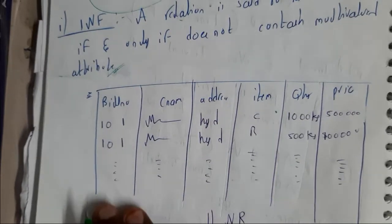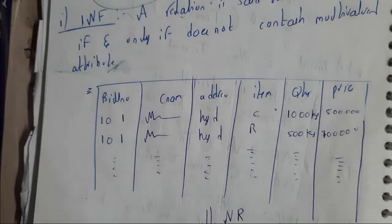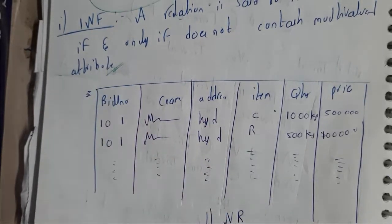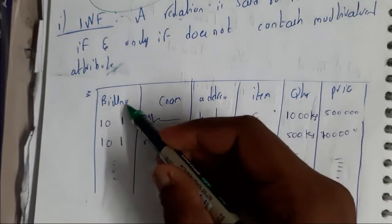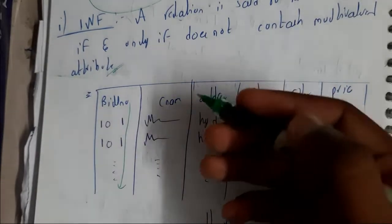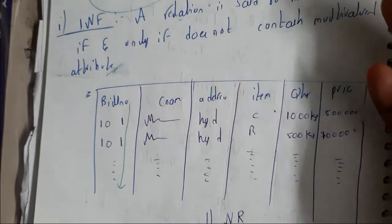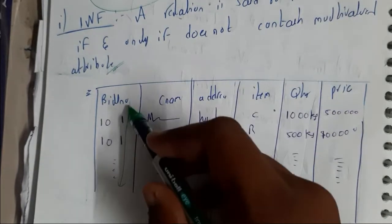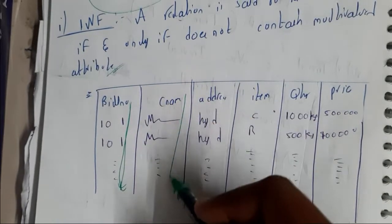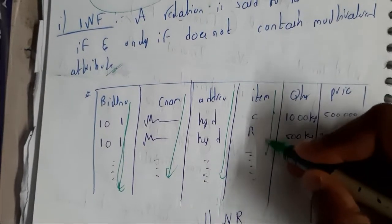A multi-valued attribute will be in this format. Whenever you take a small receipt when you go to a shopping mall you will be having a common bill number. Let us assume you went to a supermarket and bought vegetables or some groceries, so that the bill number was same, the customer name is your name, and the address is also same.